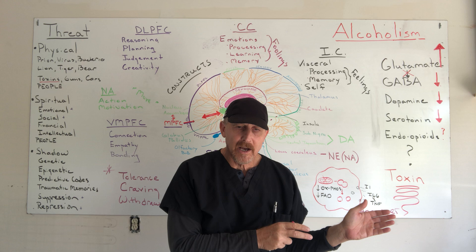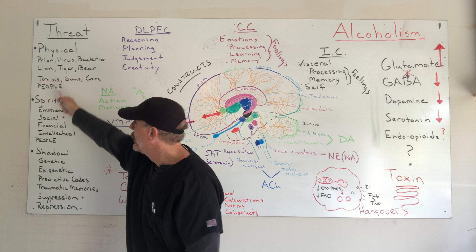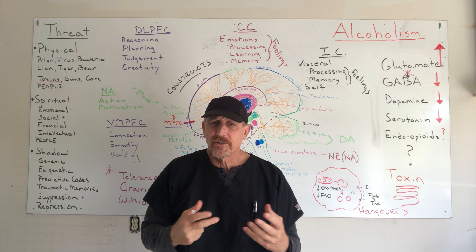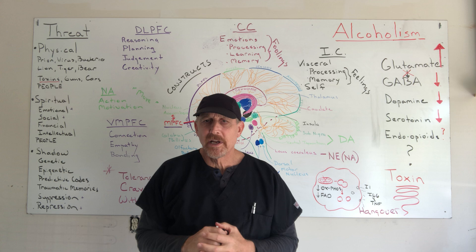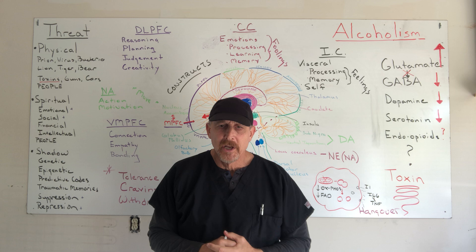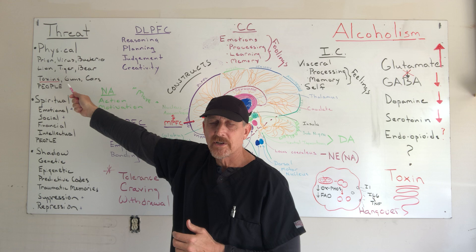To summarize the last segment on alcohol, we looked at alcohol through the lens of threat and safety. In the physical threat column we have toxins, and if we look at alcohol as a toxin — not so much how it interfaces directly or indirectly with different neurotransmitter receptors — we get a pretty good explanation for most of the effects of alcohol. We'll do the same here, looking at alcoholism under the lens of threat versus safety.